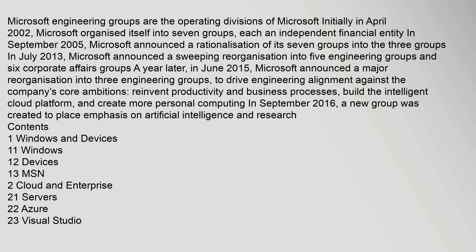Microsoft Engineering Groups are the operating divisions of Microsoft. Initially in April 2002, Microsoft organized itself into seven groups, each an independent financial entity. In September 2005, Microsoft announced a rationalization of its seven groups into three groups.